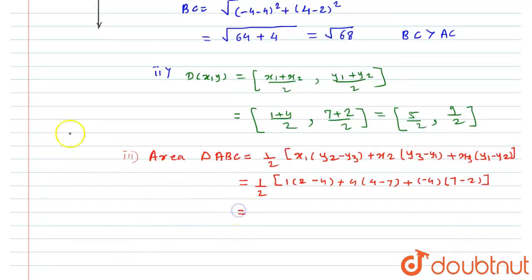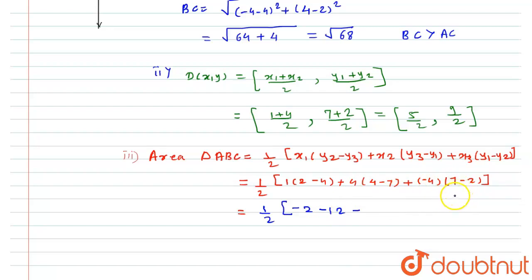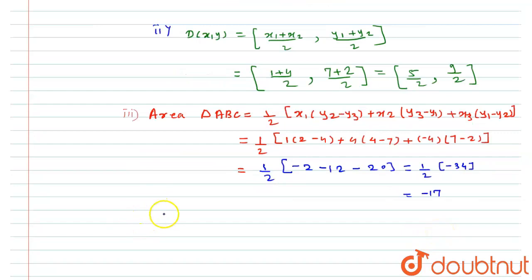Solving: (1/2) times |(1 × −2) plus (4 × −3) plus (−4 × 5)|, which gives (1/2) times |−2 minus 12 minus 20|, equaling (1/2) times |−34|. This gives minus 17, but since area is never negative, the area of triangle ABC equals 17 square units.